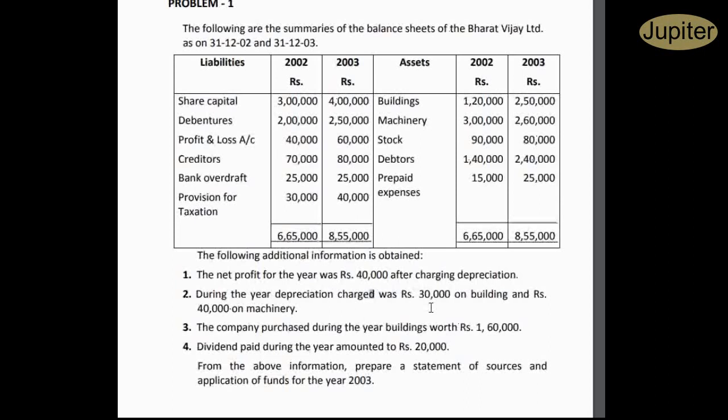The company purchased during the year buildings worth rupees one lakh sixty thousand. Depreciation on building and on machinery is provided. Dividend paid during the year amounted to rupees twenty thousand. From the above information, prepare a statement of sources and application of funds for the year 2003.